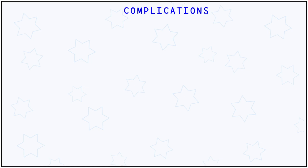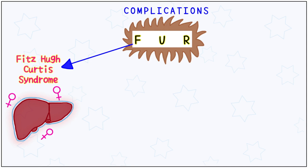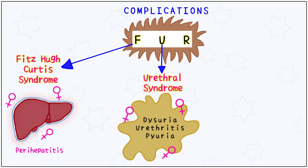Complications of this disease can easily be remembered by the mnemonic FUR. F is for Fitzhugh-Curtis syndrome, characterized by perihepatitis or inflammation of the peritoneal coating of the liver. This commonly affects females. U is for urethral syndrome, which also affects females and is characterized by discomfort during urination, pyuria, and urethritis.